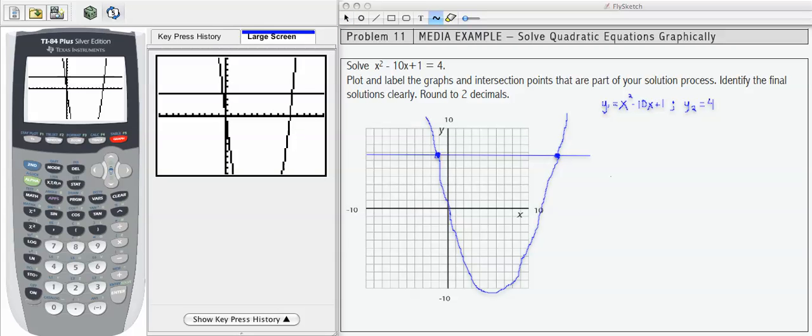So what I've done now on the right hand side is to go ahead and draw a sketch of the parabola, the horizontal line, and the two intersections that I'm looking for.